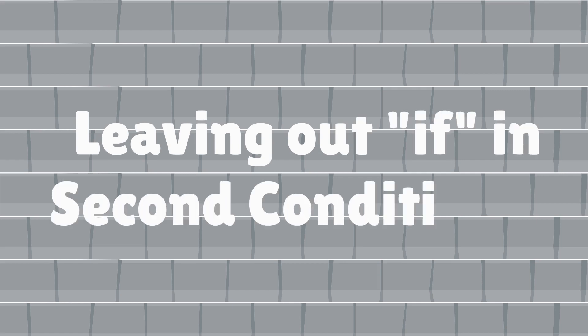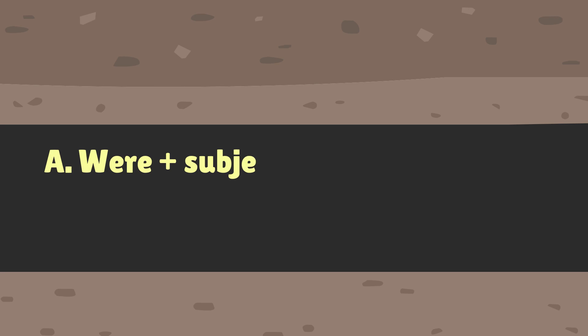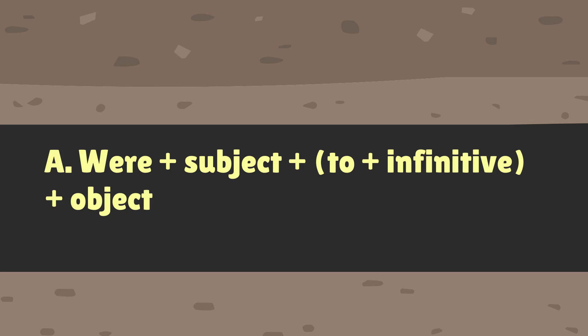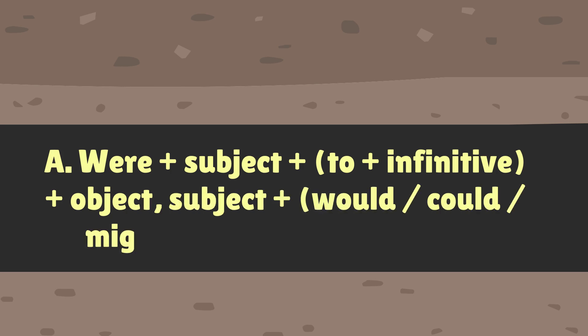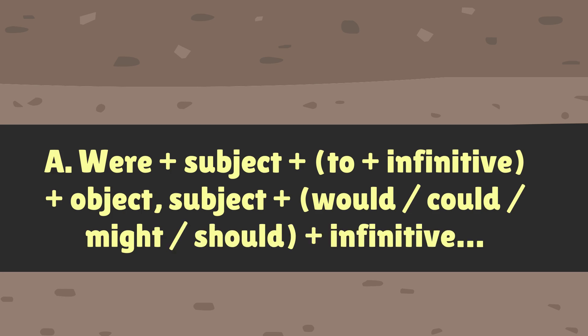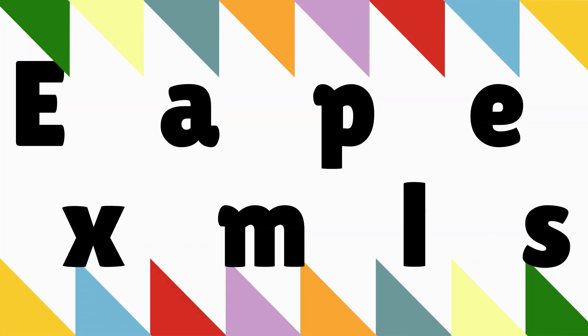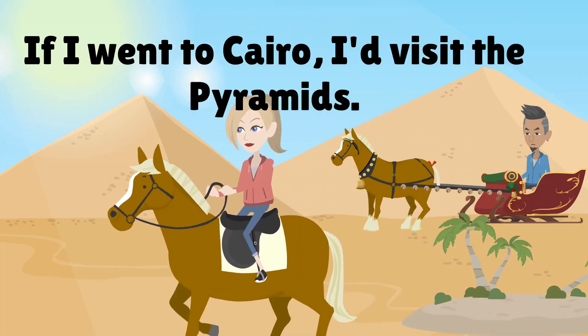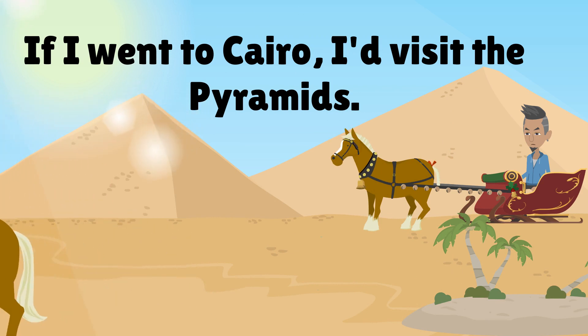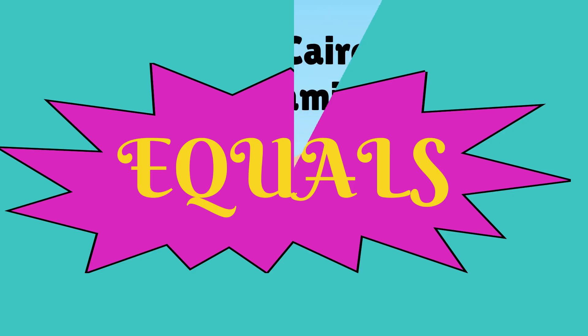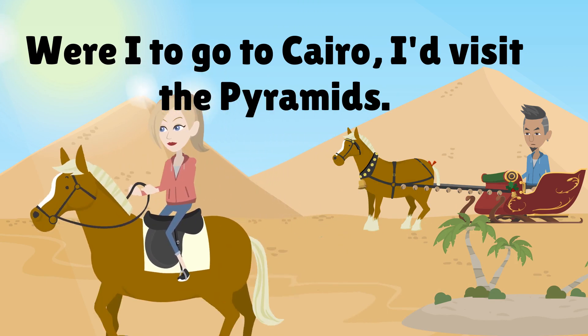Leaving out 'if' in the second conditional. Pattern A: Were plus Subject plus to plus Infinitive plus Object, Subject plus Would/Could/Might/Should plus Infinitive. Example: If I went to Cairo, I'd visit the pyramids. Equals: Were I to go to Cairo, I'd visit the pyramids.